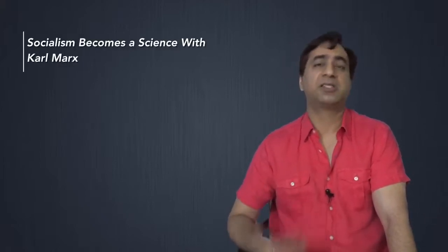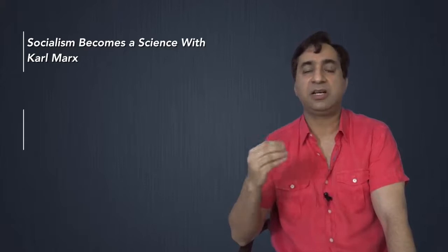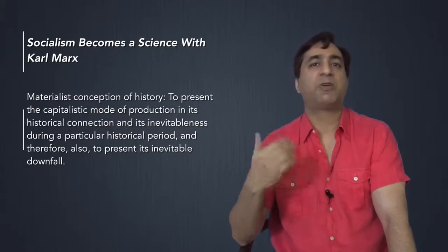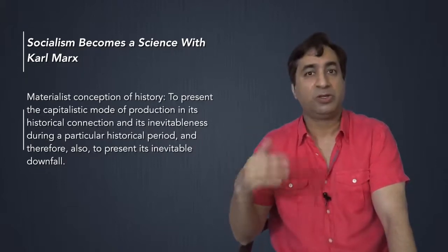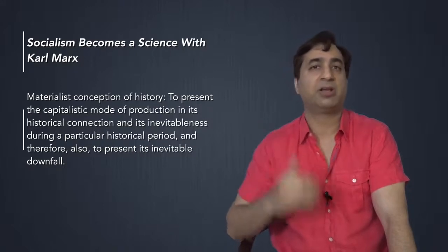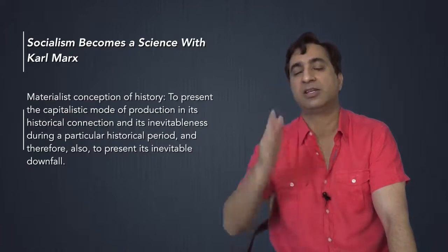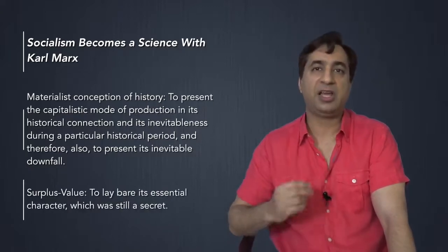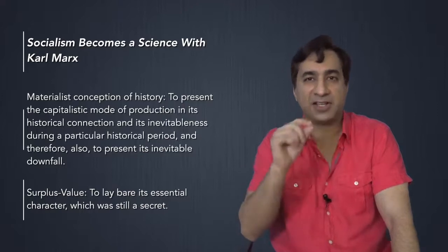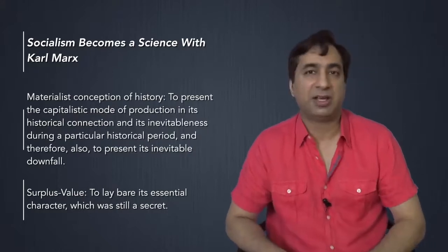Socialism became a science with Karl Marx. Why? For two main reasons. First of all, because he gave the materialist conception of history. To present the capitalist mode of production, says Engels, in its historical connection and its inevitableness during a particular historical period and therefore also to present its inevitable downfall. This was the first great contribution by Karl Marx and also by Engels. And the second great contribution was the theory of surplus value. To lay bare the essential character of the capitalist mode of production, which was still a secret. How is it that the capitalist is able to exploit the worker? And why is it that the capitalist system will always be an exploitative system?